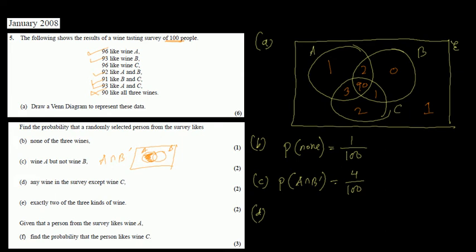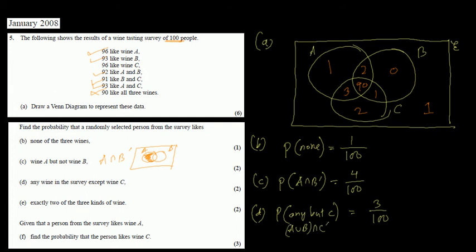Question D asks for any wine in the survey except C. Any wine except C means we look at A union B but remove the C intersection. The regions outside C — which are 1 plus 2 plus 0 — give 3 people. So the probability is 3/100. In set notation this would be (A union B) intersection C prime.